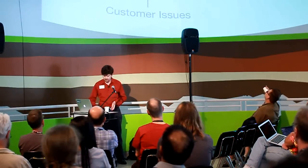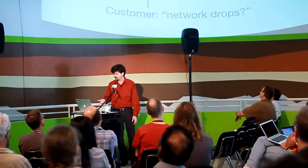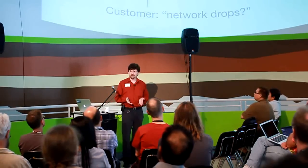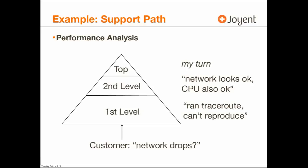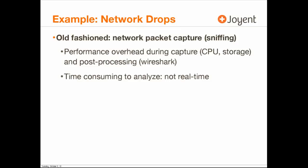For this particular problem, the customer thought they had a network problem causing packet drops, and that's why database queries were slow. First-level support couldn't reproduce it, second-level support looked at the network and that looked okay. They followed their own little methodology where they said, let's also look at the CPUs while we're here — and they looked okay. It's a good idea to have your own methodology so you can identify more issues. Then it was my turn. The old-fashioned technique is to do some network packet capture — sniffing. There's performance overhead during this, especially if you're on 10-gig networks.